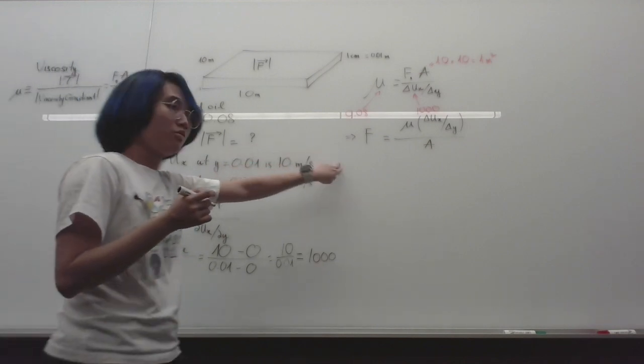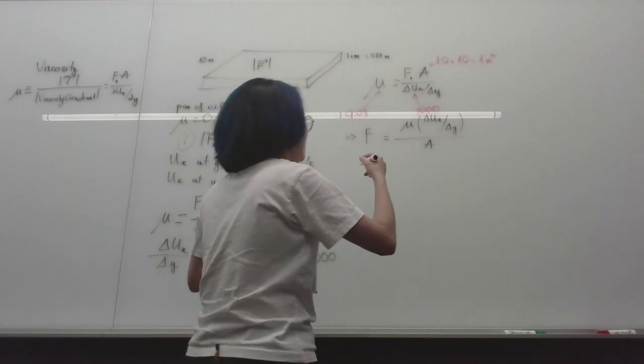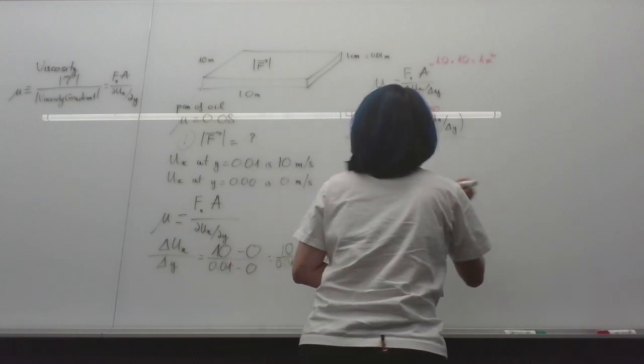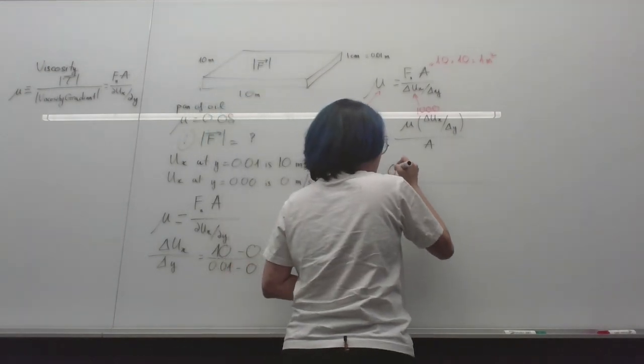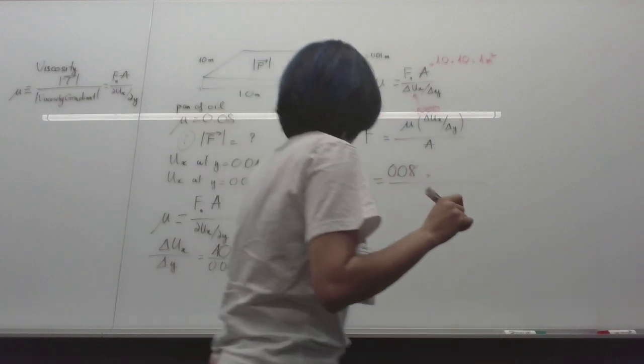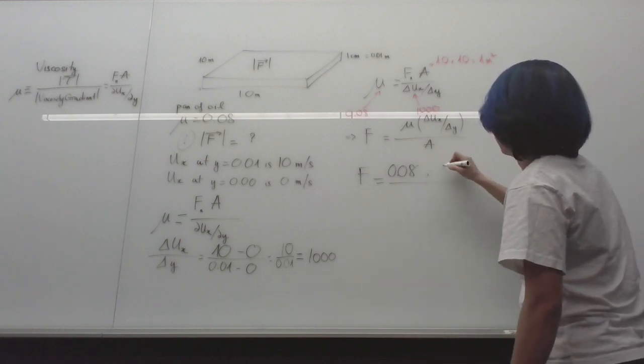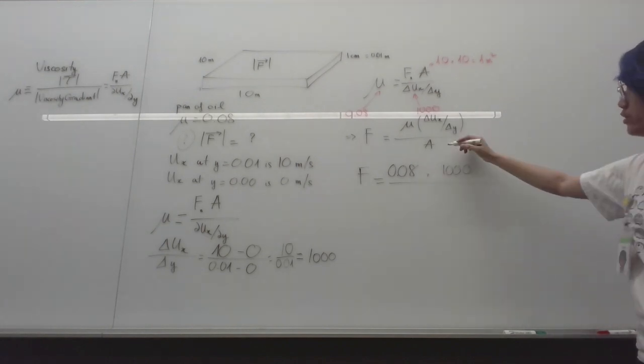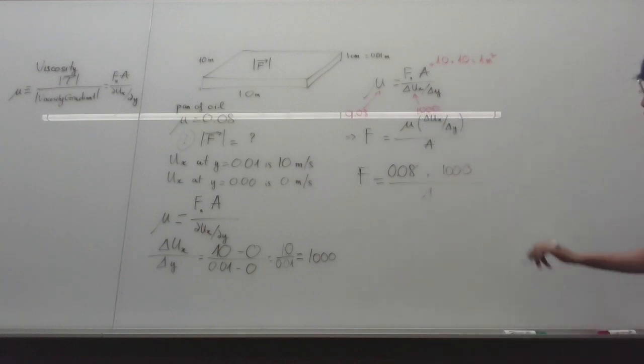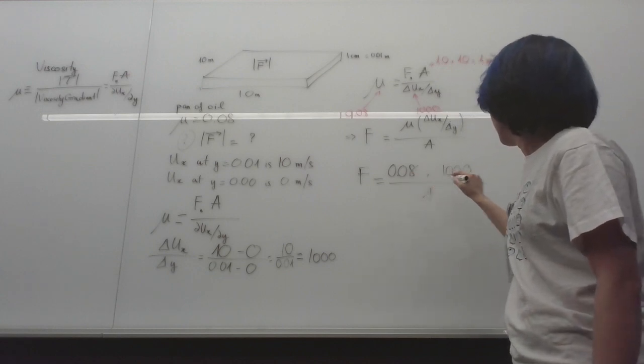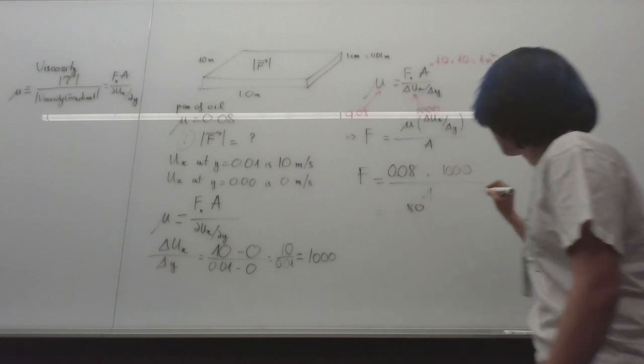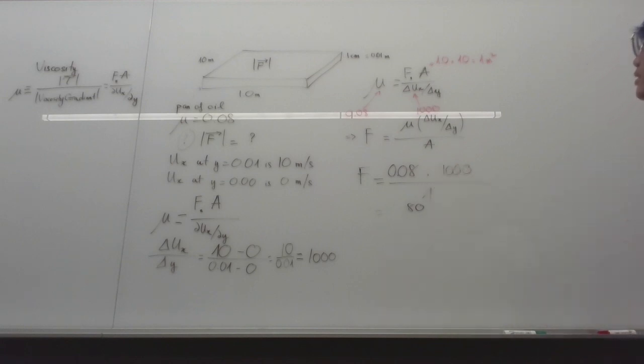So using this formula we will plug in all the values that we have to find the force. The force will be the viscosity which is 0.08, the rate of change which is 1000, and then the area which is 1 meter squared. So we will have 0.08 times 1000 divided by 1, which equals 80 Newtons.